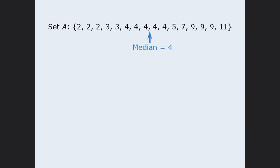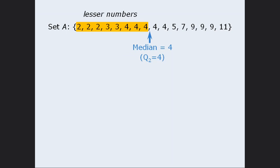The median and the second quartile are always the same, so we can see that the second quartile, denoted as Q2, is equal to 4 as well. At this point, the median divides our list into two groups. On the left-hand side we have the lesser numbers, and on the right-hand side we have the greater numbers. To find the other two quartiles for our box plot, we must find the median of the lesser numbers and the median of the greater numbers.